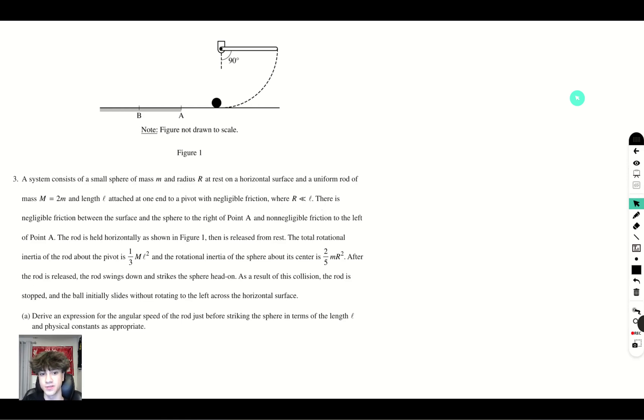A system consists of a small sphere of mass m and radius r at rest on a horizontal surface and a uniform rod of mass equal to 2m and length l attached at one end to a pivot with negligible friction where r is much smaller than l. There is negligible friction between the surface and the sphere to the right of point A and non-negligible friction to the left of point A. The rod is held out horizontally as shown in figure 1 then released from rest.